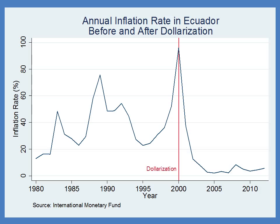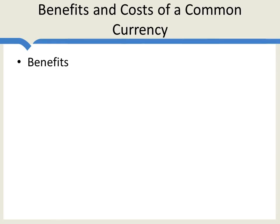Moreover, the inflation rate in Ecuador is no longer controlled by the Ecuadorian central bank — it's controlled by the Federal Reserve, the U.S. central bank. The Federal Reserve may be controversial in the United States, but on a world scale it is a very high-quality, independent institution that has managed to keep a low inflation rate by world standards. So it's a big improvement over the Ecuadorian central bank. One of the benefits of using another country's currency is that if you choose a country with a better central bank, you'll get a lower and more stable inflation rate, and that makes your own economy work better.